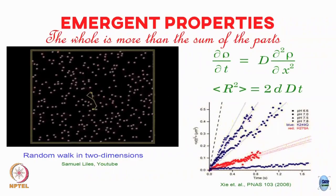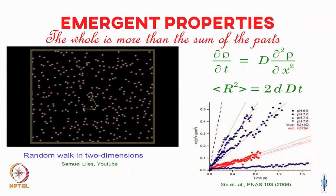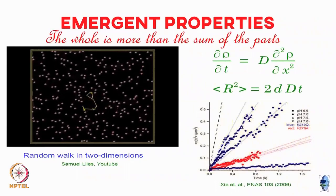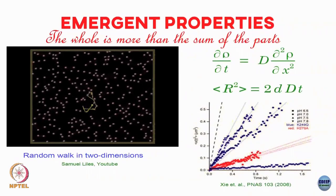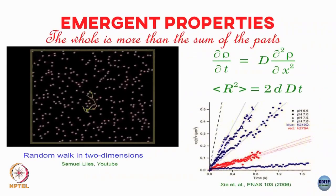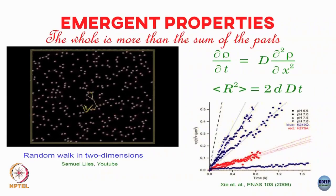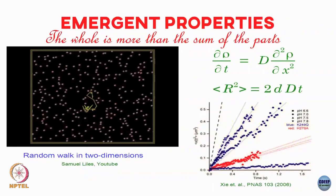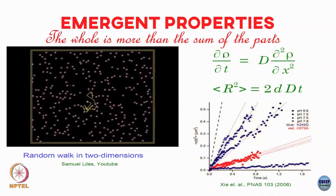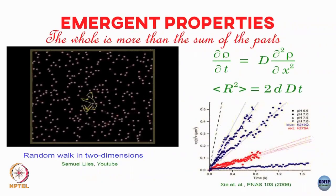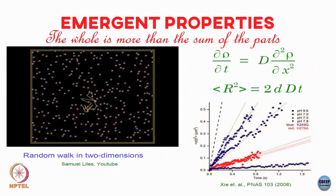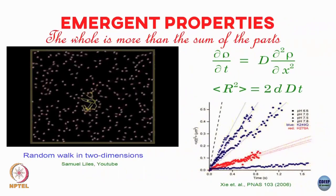We will often see examples of this sort of emergent feature, and as we discussed last class, the ultimate puzzle would be life itself as an emergent property — not something we will address directly, but something good to keep in the background.